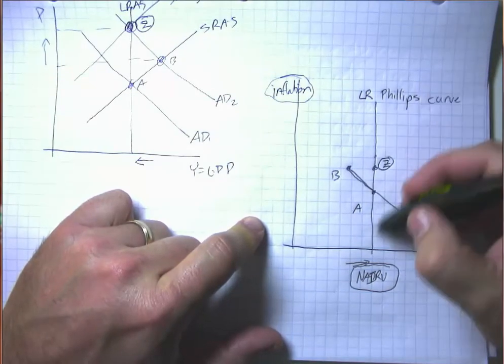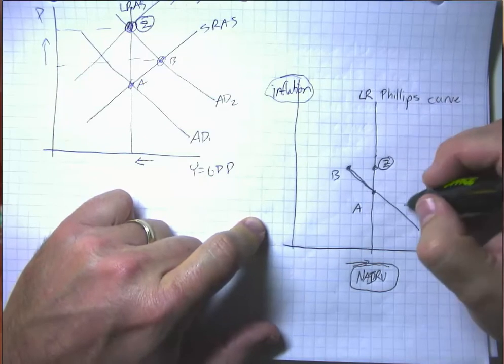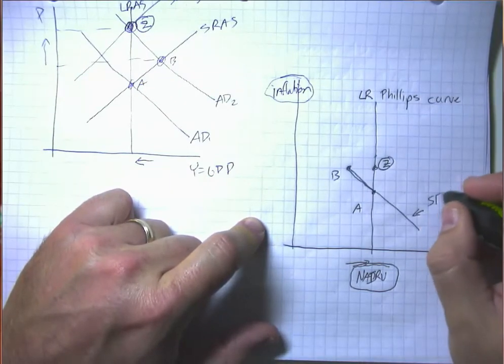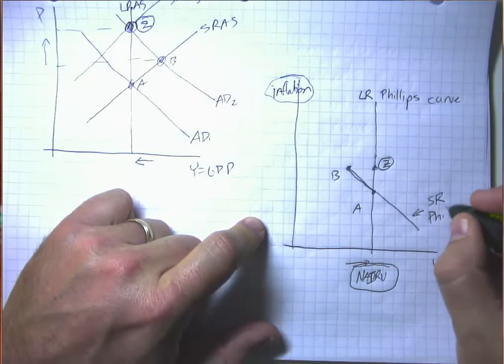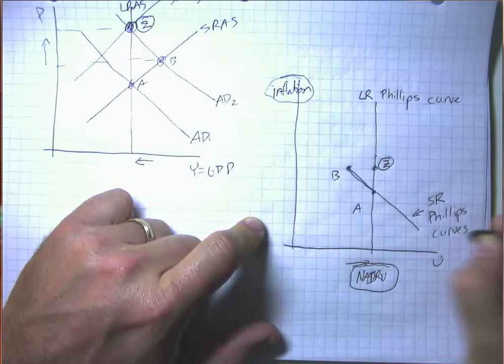So that's essentially what this vertical long run Phillips curve represents. The short run Phillips curve has this downward slope.